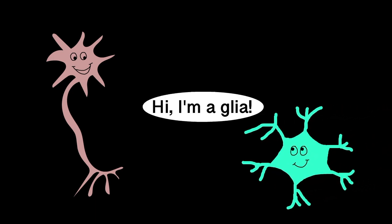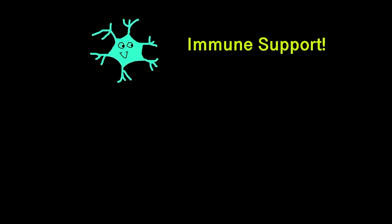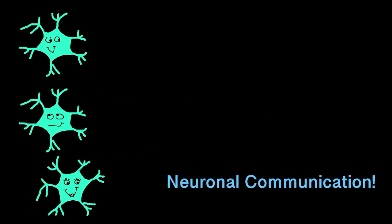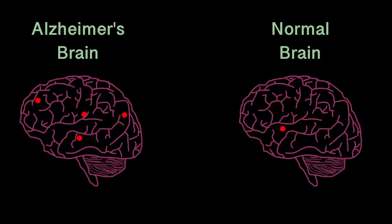Glia are known as the helper cells for neurons and play important roles in immune function, metabolism, and neuronal communication. The brain of someone with Alzheimer's has more inflammation than someone without Alzheimer's.